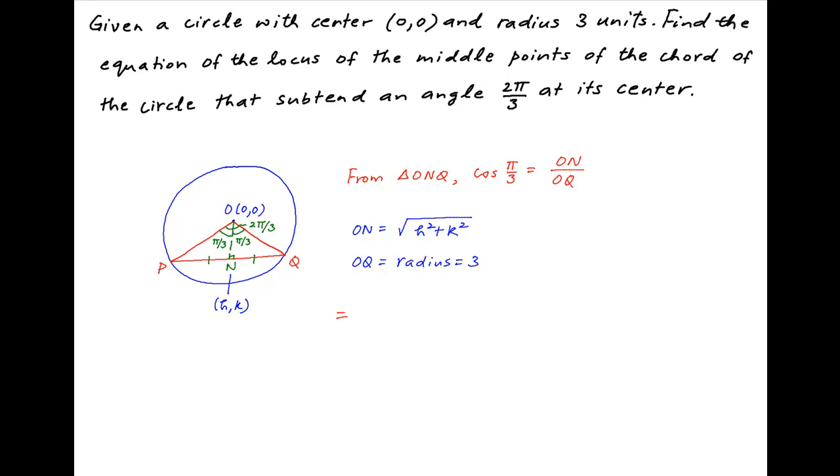Therefore, cos(π/3) which is equal to 1/2 is equal to √(h² + k²) divided by 3. This implies that √(h² + k²) is equal to 3/2. Taking the square of both sides we get h² + k² is equal to 9/4.